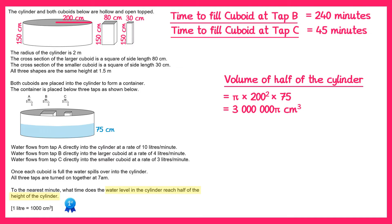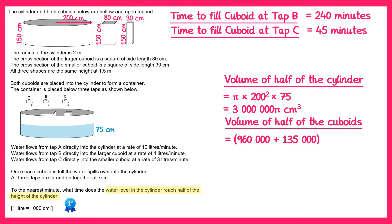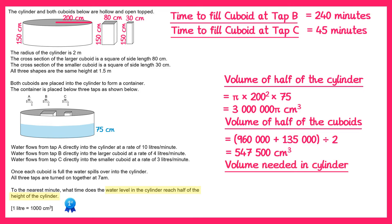Now remember the cylinder has two cuboids inside it as well, so they're taking up some of that space. We need to remove half of the volume of the cuboids from this volume. The volume of half of the cuboids equals the total volume of all the cuboids — 960,000 plus 135,000 — divided by 2, which gives you 547,500 centimetres cubed. So the volume of water that needs to go directly into the cylinder will be 3,000,000π subtract 547,500, which gives you 8,877,277.961 centimetres cubed.